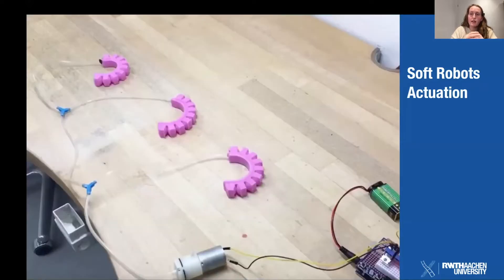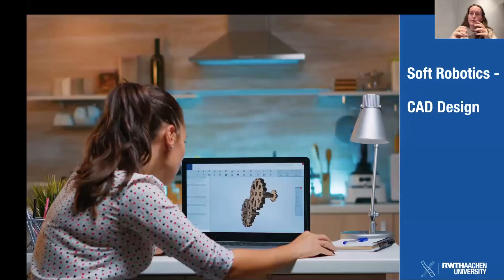Soft robots are usually actuated by air, liquids, or embedded thread, and the movement is defined by the internal geometry. We focused on pneumatic soft robotics. To create a pneumatic soft robot, we first designed it in CAD to define how it should move.